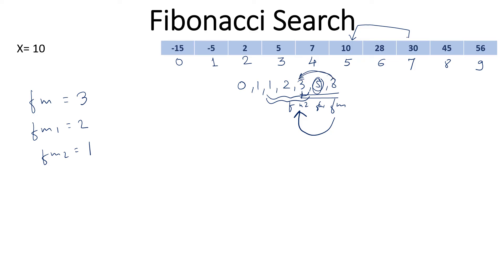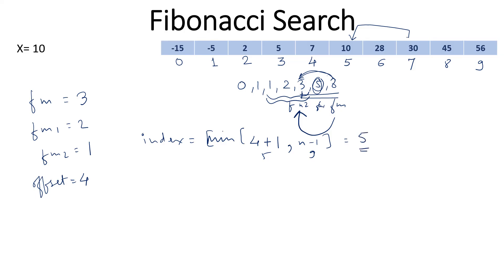Starting the new iteration, the index is the minimum of offset plus fm2, which is 4 plus 1 equals 5, and n minus 1 which is 9. So the index is 5. We compare the element at index 5 and we find element 10 there. Hence we return the index 5, which is where we found the element.